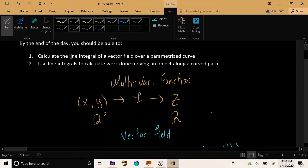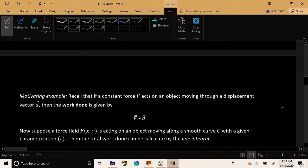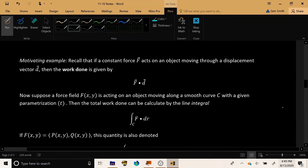So our goal for today is to calculate the line integral of a vector field as opposed to the multivariable functions that we did yesterday. And then we're going to do an application where we use line integrals to calculate work done, moving an object along a curved path. And for our motivating example, let's go back to thinking about work done and let's remember that if a constant force indicated by some vector quantity F acted on an object which was moving through a displacement vector represented by the letter D, the work done by that force on that object was given by the dot product F · D, force dot displacement.